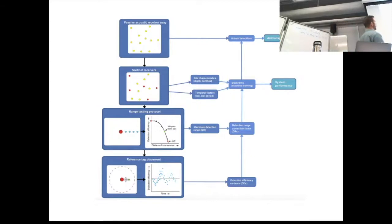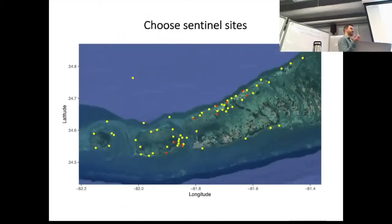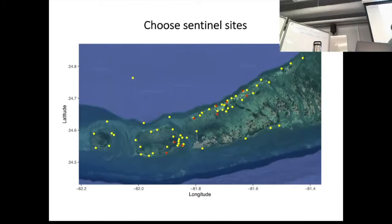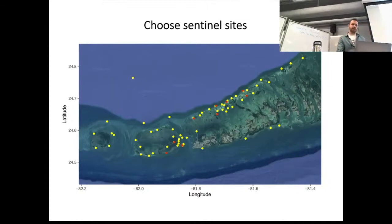This is basically the framework we came up with. You take your acoustic receiver array and pick a set of sentinel sites where you'll do range testing and monitor detection efficiency over time. It's very important to select sites that represent the entire range of conditions across your system, because you're going to develop a model based on those sites and make predictions throughout your entire array. You need to capture all the conditions — different substrate types, water depths, different fetches and angles toward the wind. This is our array in the Florida Keys — Key West is right here — and we selected nine sentinel sites across our array, trying to capture all the different conditions while remaining logistically feasible.